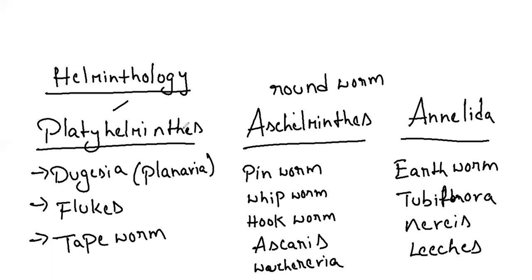One more thing about the excretory system: for platyhelminthes, the excretory organs are flame cells, also called protonephridia or solenocytes. For aschelminthes it is renette cells. And for annelida it will be nephridia. When it comes to the circulatory system, for platyhelminthes and aschelminthes there is no circulatory system. For annelida, you have a closed circulatory system with hemoglobin dissolved in plasma.